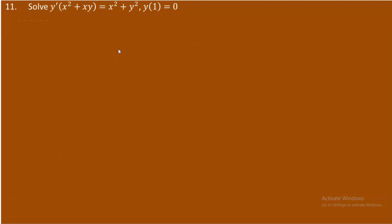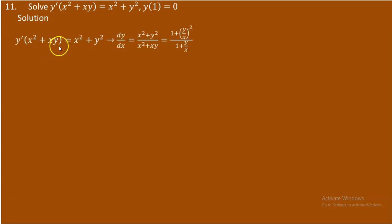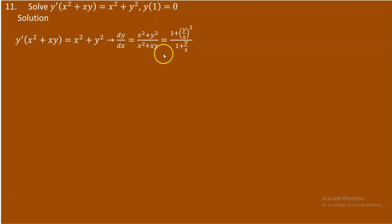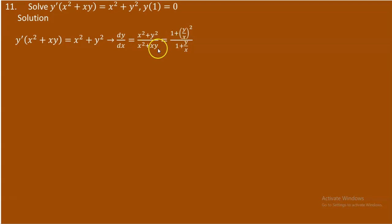The equation y prime (x² + xy) = x² + y² can be rewritten. Since y prime is dy/dx, bring the denominator to the right side. Multiplying numerator and denominator by 1/x², we get dy/dx = (1 + (y/x)²) / (1 + y/x). The right side is entirely a function of y/x.